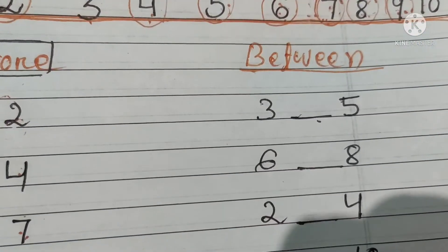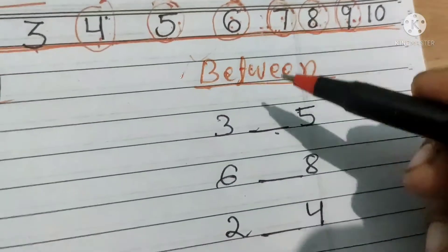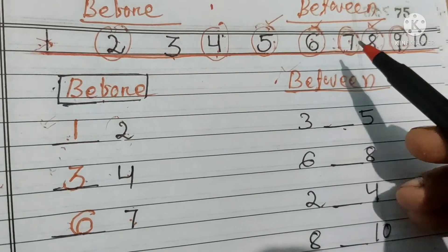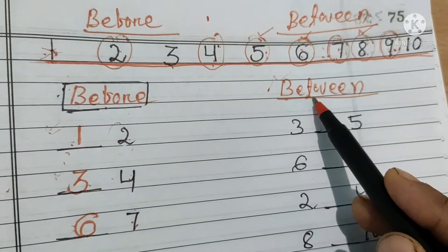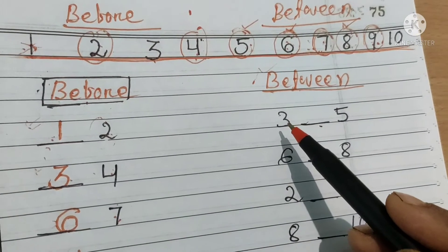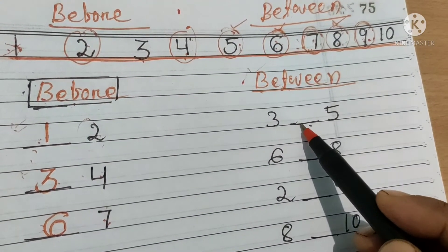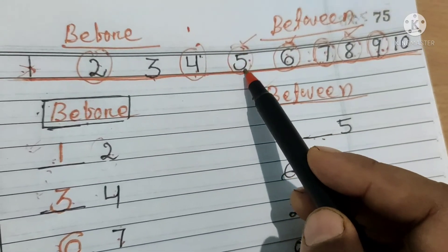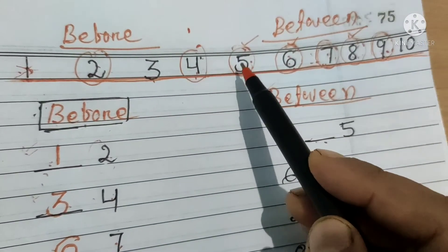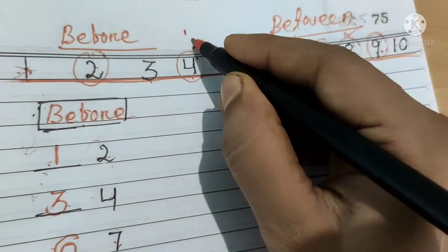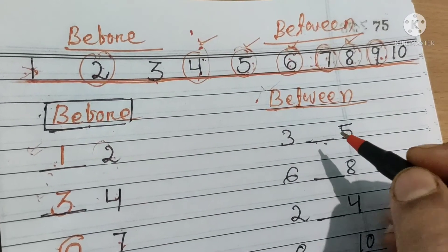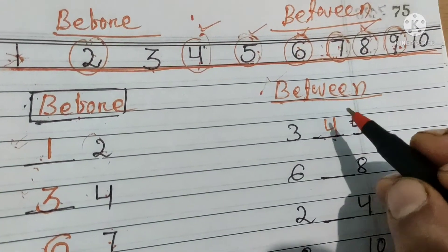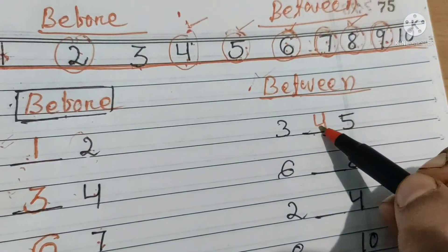So students, now we are going to learn about between numbers. Between number kya hai? Between number matlab beech wale number. Haom number line ke help se between number bhi karenge. Three and five ke beech mein konsa number aata hai? Chalou number line dekh lete hain. Idhar likha hai number three, aur idhar likha hai number five. Three and five ke beech mein konsa number aata hai? Number four aata hai. So we will write here number four. Between matlab beech wala number.